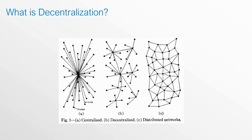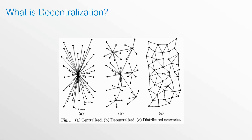Let's talk about decentralization as it applies to blockchain. To begin, I'd like to share with you a diagram that odds are you may have already come across when you've done any research on decentralization. In the diagram, you see centralized versus decentralized versus distributed networks. People often think that when you look at this diagram, you're also talking about a decentralized blockchain. But what you need to take into context is that this graphic is actually taken from a white paper published in 1962 by Paul Barron, called 'On Distributed Computing Networks.' So what you're seeing is actually centralized versus decentralized versus distributed computing networks, not blockchains.